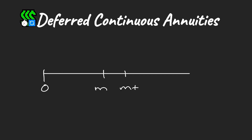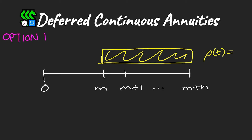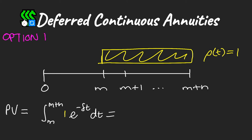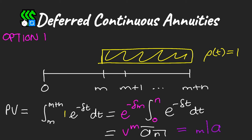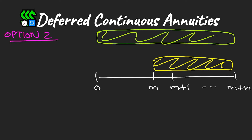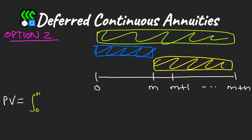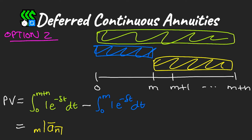We now consider continuous annuities. With rate of payment equal to one, paid from time m to m plus n, the present value is the integral of the payment function times the discount factor over the relevant period. Pulling out the constant e^(−δm) from the integral, we see this is simply our discount factor for m periods multiplied by our usual continuously payable annuity.